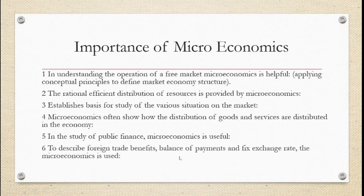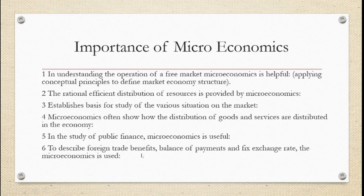The next point is that microeconomics describes foreign trade benefits, balance of payments, and fixed exchange rate determination. Regarding foreign trade benefits, microeconomics tells us that in international transactions we can benefit. For example, if we export goods worth 100 crore rupees and import worth 1.5 crore, we can benefit by 50 crore rupees.